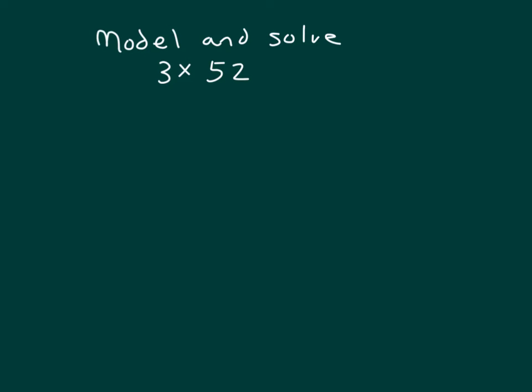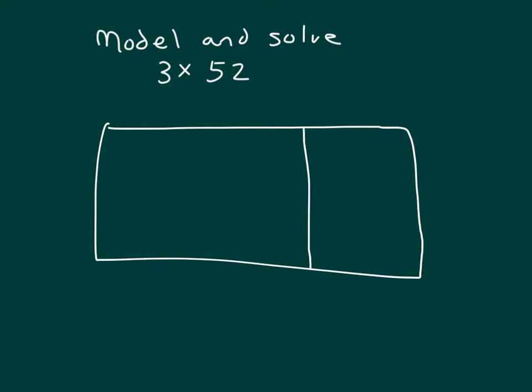Here we're asked to model and solve three times 52. Let's use a place value chart, where we'll use one's disks, and tens disks, and hundreds disks. Will we look at three or 52 first? Right, we will look at 52. What is 52 in unit form? It is five tens, along with two ones, and that's what we'll model into our chart.